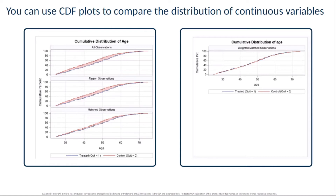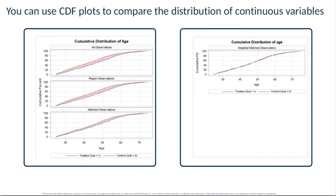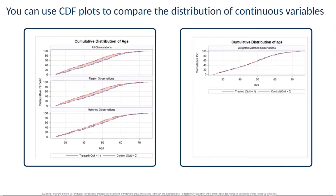But it is also important to look at the balance achieved across the entire distribution of a variable, not just its mean. These CDF plots are one way of doing this, and they are perhaps my favorite plots produced by PROC PSMATCH. In the plot shown here for the variable age, you can see that in the input data, subjects in the treatment condition tend to be older than subjects in the control condition. However, good balance is achieved in the weighted match data shown in the top right panel. One downside of these CDF plots is that for larger data sets, when you request these plots for many variables, it can take quite a while for the procedure to produce them. In those situations, box plots can provide a more efficient comparison.